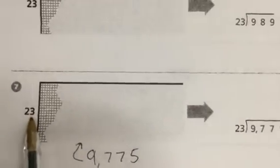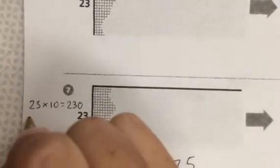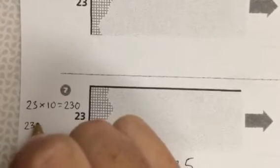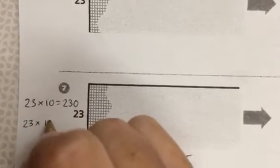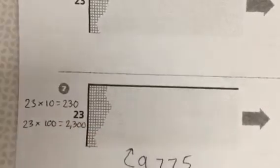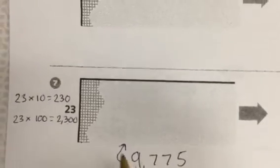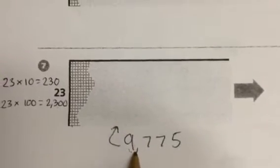So let's think about what I know about 23 first. I know that 23 times 10 is 230. I also know that 23 times 100 is 2,300. That's going to be pretty helpful to get me to this larger number. I could keep dividing by 10 every time, but it's going to take me a while to get rid of all of those numbers.